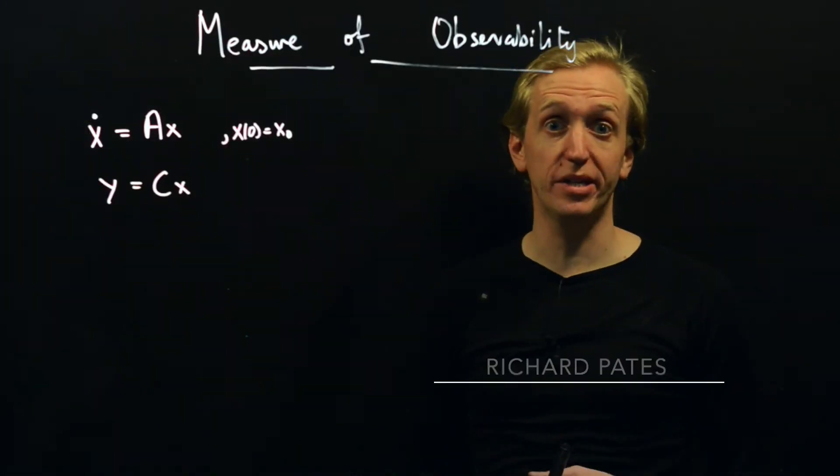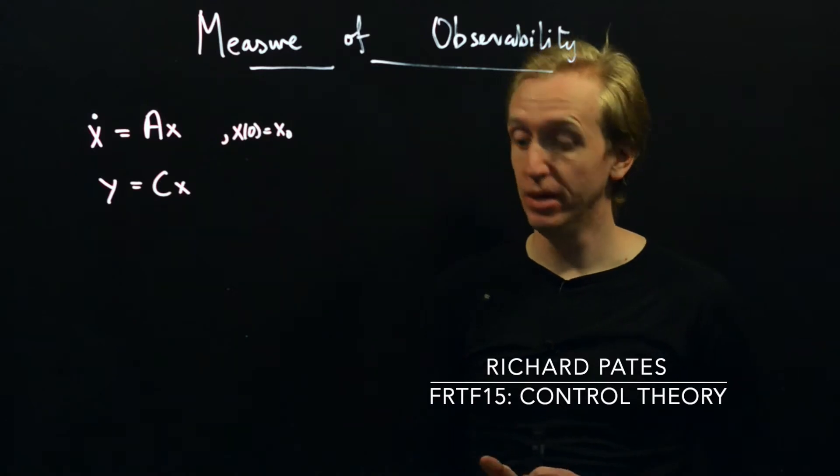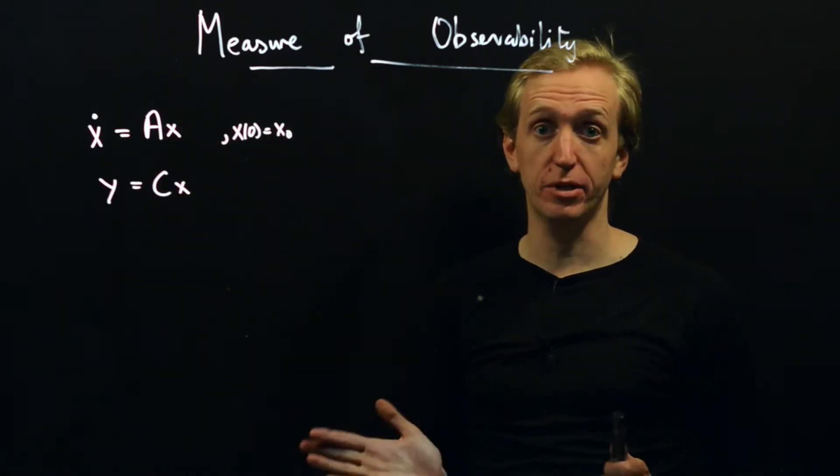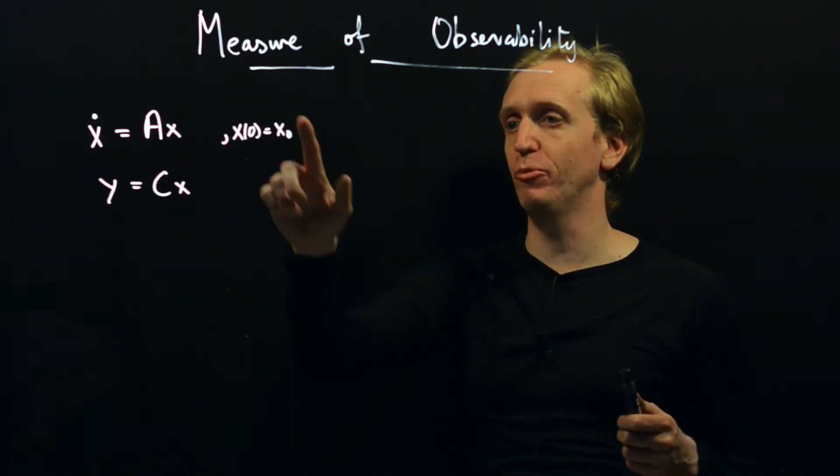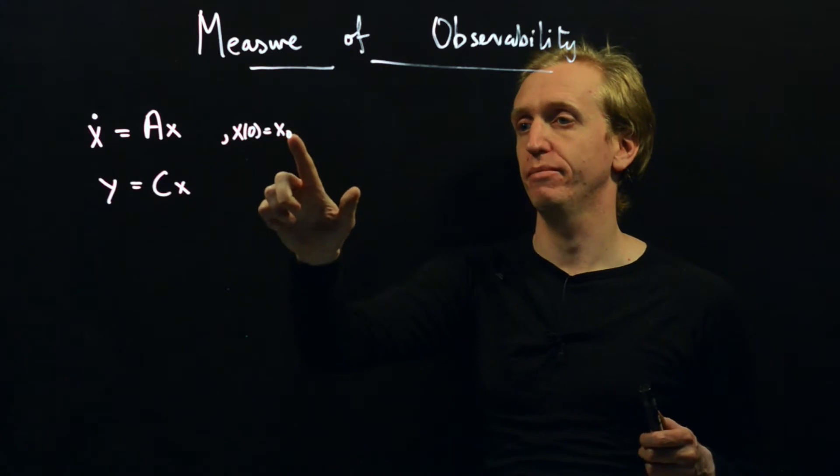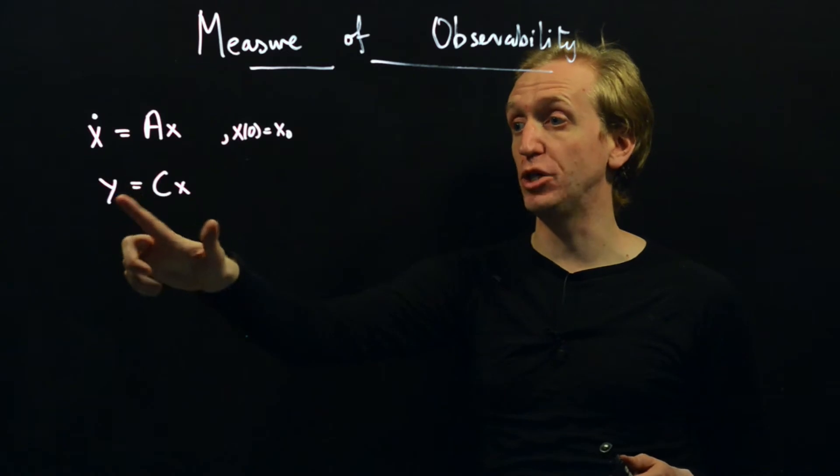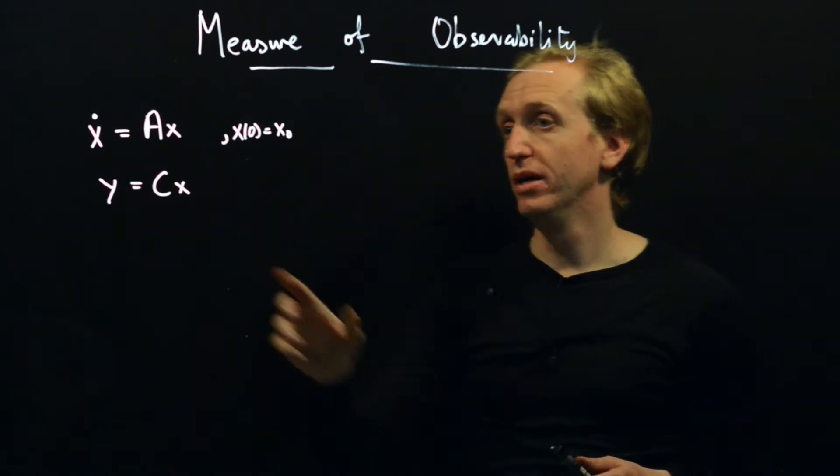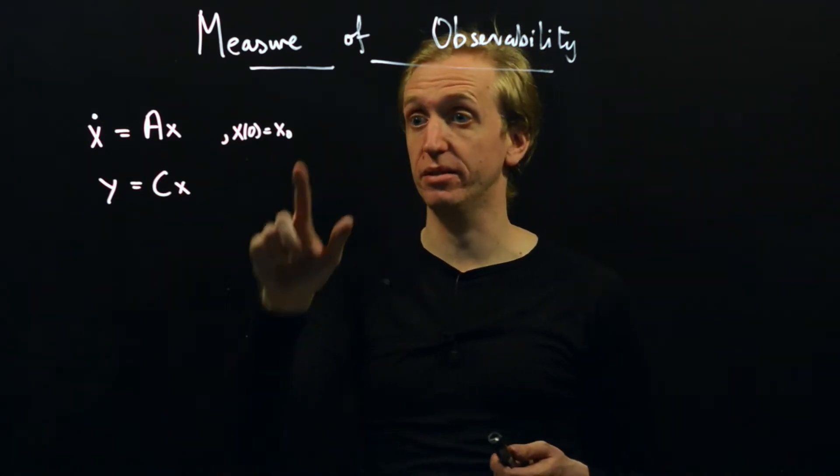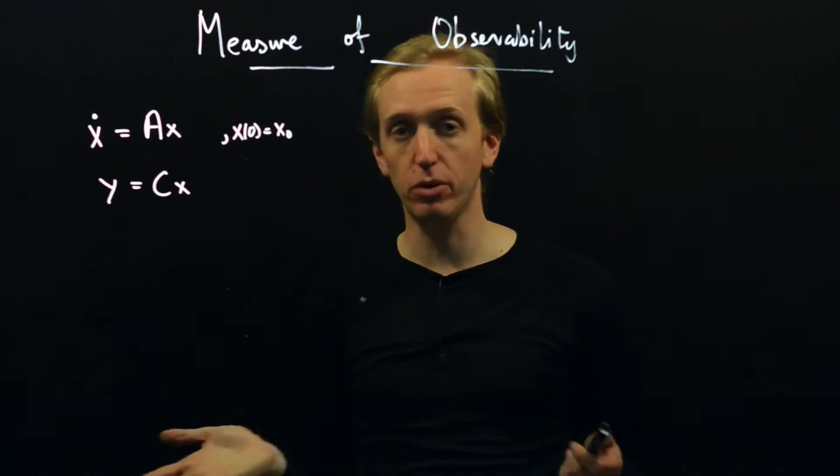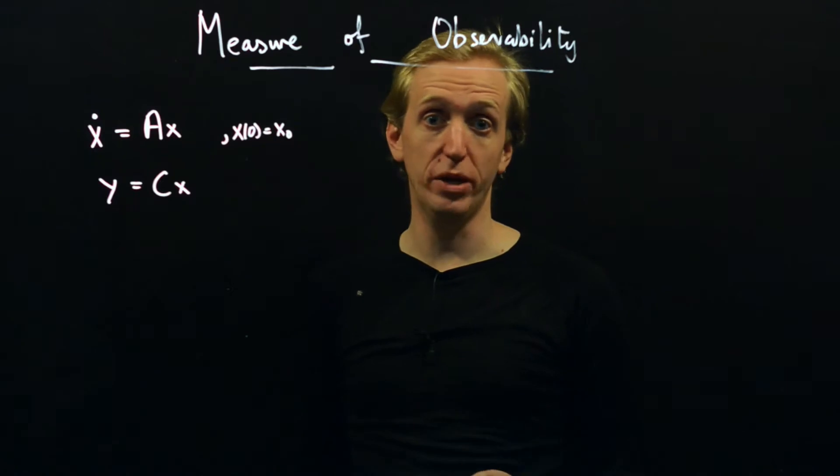Okay, now let's use these least squares ideas to solve a kind of observability type problem. So let's suppose that we have a state-space model with no inputs and we're interested in the initial condition x0, and we want to estimate this initial condition based on our measurements of the output y. We know that if the system is observable and we have perfect measurements y, this can always be done.